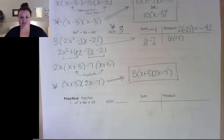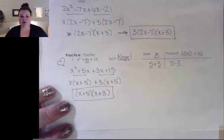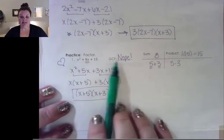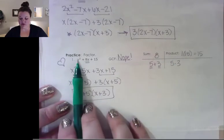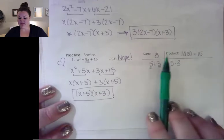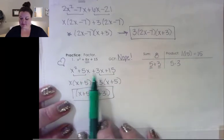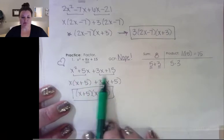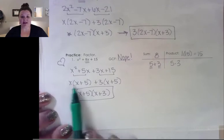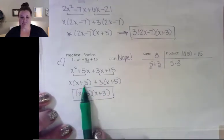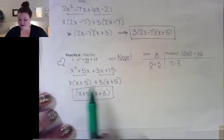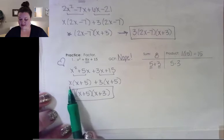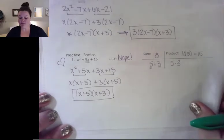There are three problems for you to try — pause the video when ready and we'll go over them. Number one does not have a greatest common factor. Its sum is 8 and its product is 1 times 15 equals 15. Two numbers that multiply to 15 and combine to 8 are 5 and 3. Replace the middle term with 5x and 3x, then group. Take an x out of the first pairing and a 3 out of the second — both leave x plus 5. Factor out x plus 5, leaving x and 3, so the answer is (x+5)(x+3).